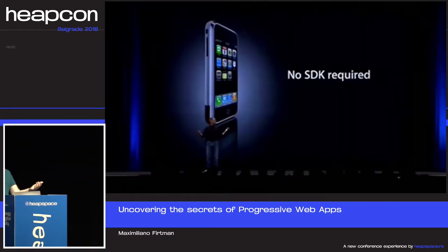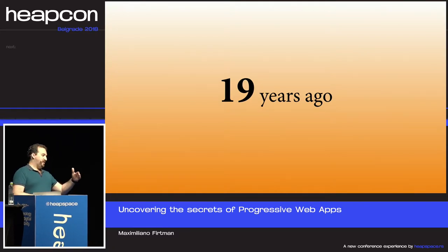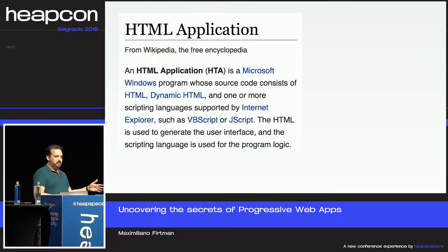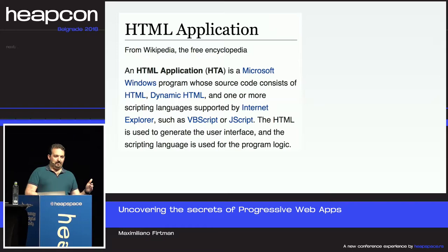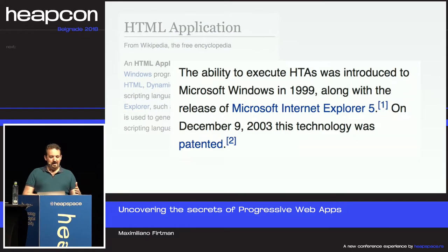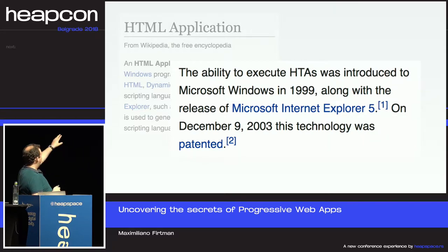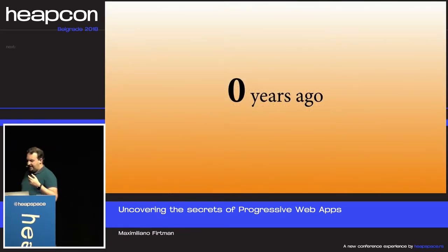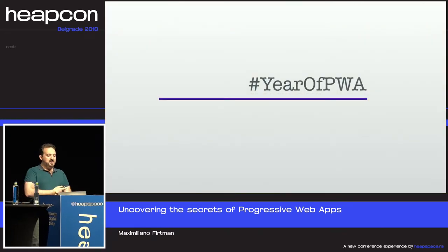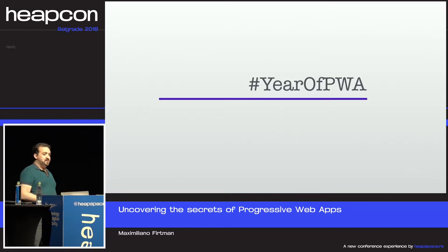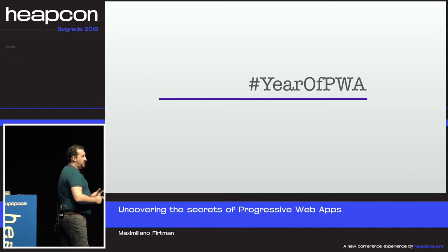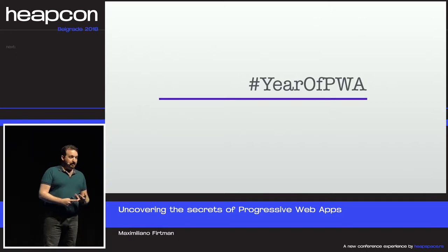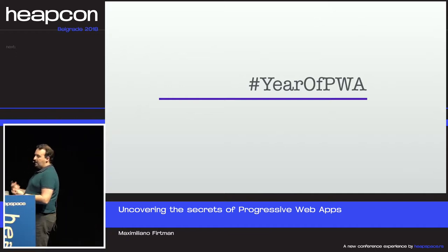No SDK required — no native apps. And it doesn't end with Apple 11 years ago. 19 years ago, Microsoft created something called HTAs — HTML Applications — which is pretty much the same thing. The ability to execute HTAs was introduced with IE5. The idea of creating apps using web technologies is not new. But this year is known as the year of PWA, because now it works everywhere, and big names like Facebook, Twitter, Tinder, Uber, and Lyft have impressive PWAs.